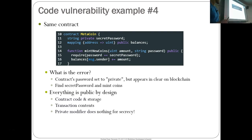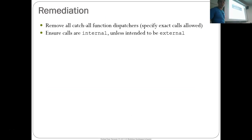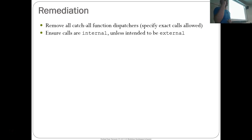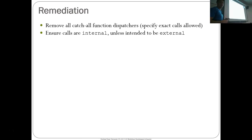Everything is public by design — the contract code, the storage, and the transaction contents. You can just look at the last mintNewCoins transaction. The private modifier does nothing for secrecy — don't conflate the two. Remediation for this vulnerability: remove all catch-all function dispatchers, specify exact calls allowed. When you see a fallback function doing a straight-up delegate call, you should check the function signature hashes of the calls you want exposed in that library.